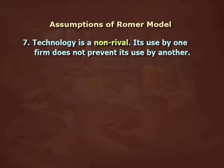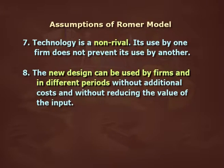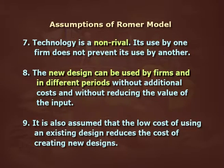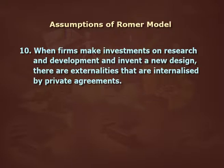Seventh, technology is non-rival: its use by one firm does not prevent its use by another. Eighth, a new design can be used by firms across different periods without additional costs and without reducing the value of the input. Ninth, the low cost of using an existing design reduces the cost of creating new designs. Lastly, when firms invest in research and development and invent a new design, there are externalities that are internalized by private agreements.